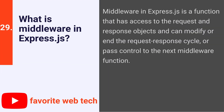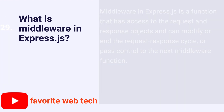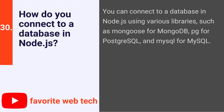What is middleware in Express.js? Middleware in Express.js is a function that has access to the request and response objects and can modify or end the request-response cycle or pass control to the next middleware function. How do you connect to a database in Node.js? You can connect to a database using various libraries, such as Mongoose for MongoDB, pg for PostgreSQL, and mysql for MySQL.